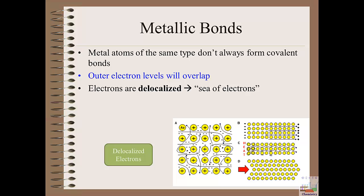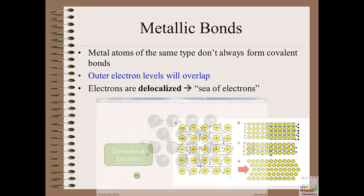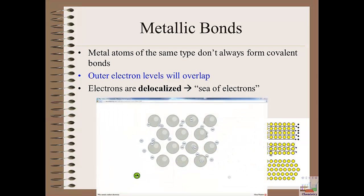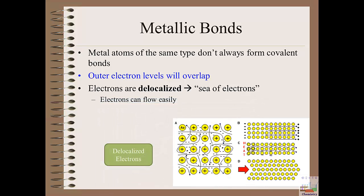The electrons in a metallic bond are what we call delocalized, and that means that they really aren't tethered to any one specific metallic nucleus. Because they're loosely held, they're free to move from one atom to another with little resistance. And so what this creates is sort of a sea of electrons and the nuclei of the metallic atoms are like the islands in this sea.